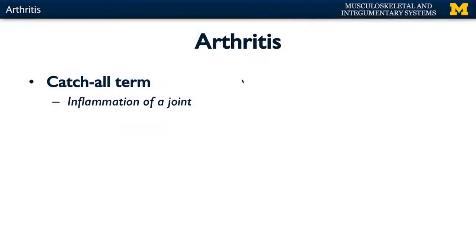You cannot discuss joints without talking about the main clinical importance associated with joints, and that's arthritis. We've all heard of arthritis — we'll talk about the three main types in this video. Arthritis is really a catch-all term; it's any type of inflammation of a joint. Depending on specifically what's inflamed and how it goes about being inflamed is what differentiates the different types of arthritis.